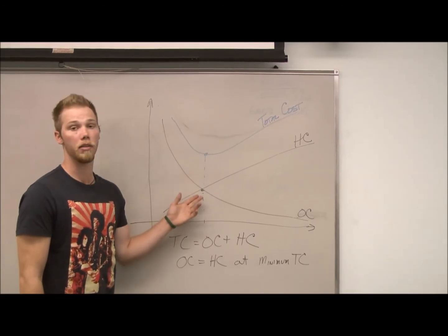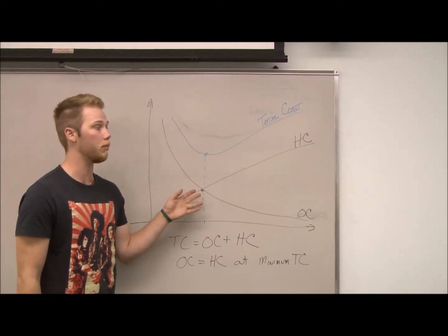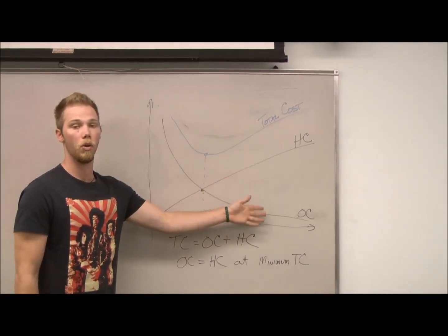The point where total cost is the lowest is the equilibrium point between holding costs and ordering costs.